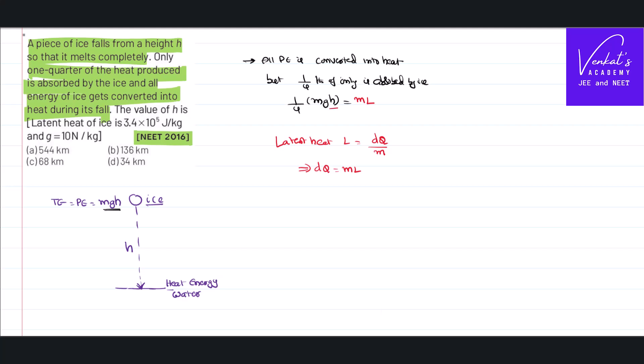Then h is how much - that's the question. The value of the latent heat is given. m and m can be cancelled, that implies gh by 4 equal to L, which implies h equal to 4L by g.